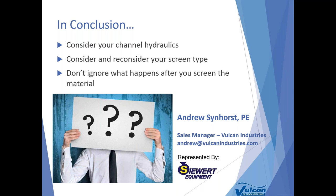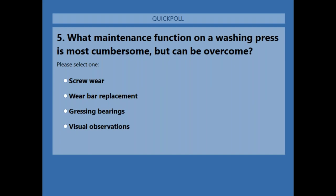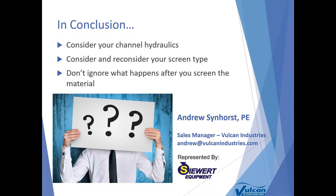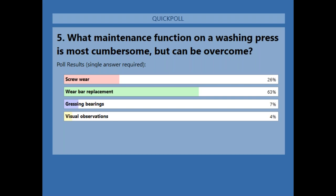The last poll question: what maintenance function on a washing press is most cumbersome but can be overcome? The answer is wear bar replacement — and 63% of you got that correct.